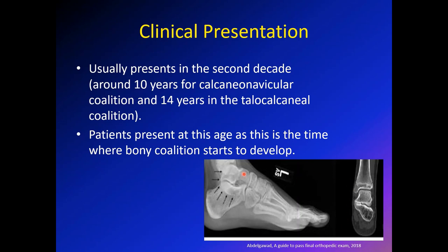You can see in this CT image — from my other book, Passing the Board — there is coalition between the talus and the navicular, and you can see what we usually refer to as the C sign. We will speak about that in detail when we come to imaging. So clinical presentation is usually around age 10 for calcaneonavicular and around age 14 for subtalar or talo-calcaneal coalition, because this is when the coalition matures into a bony coalition.